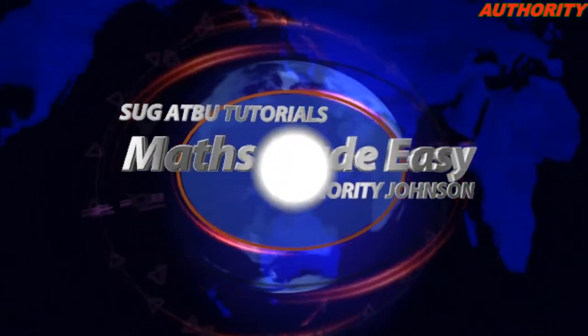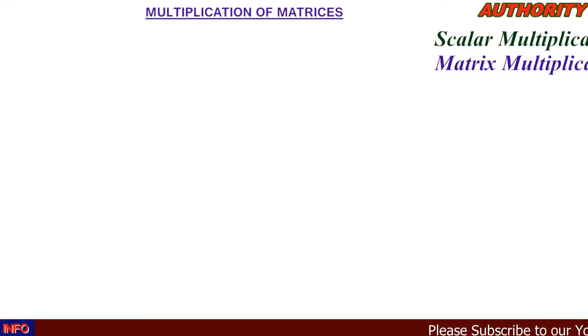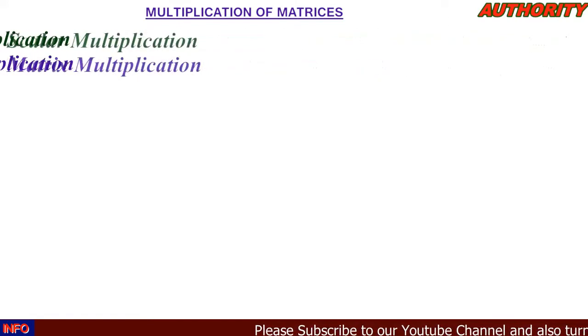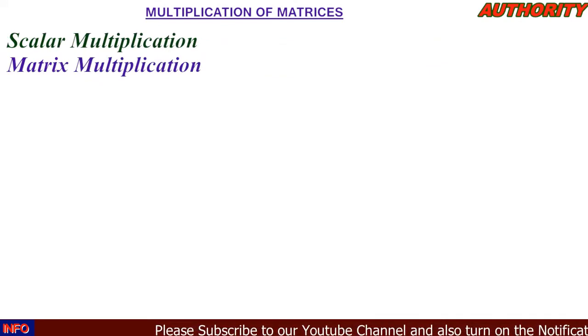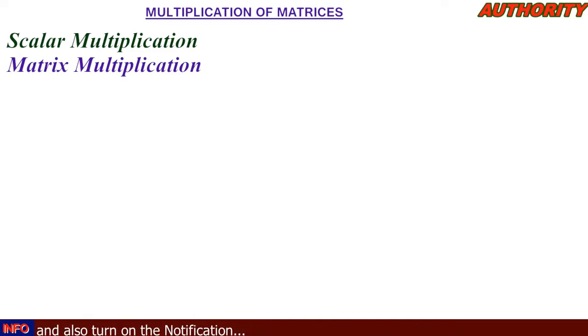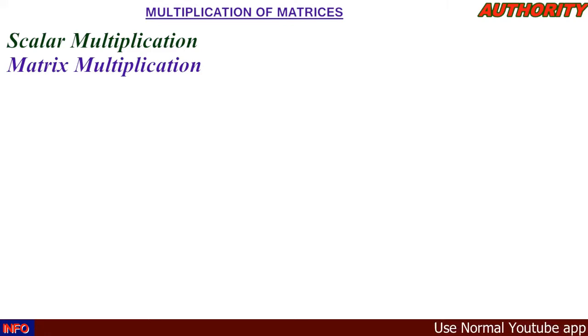Today we're going to talk about multiplication of matrices. Under this topic we're going to consider two types of multiplication: scalar multiplication and matrix multiplication.